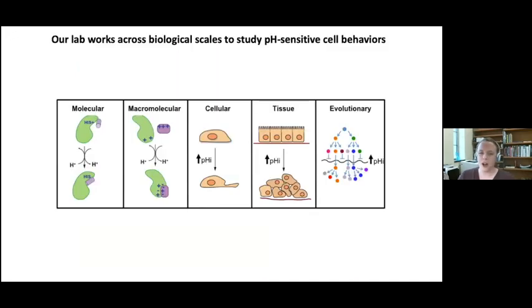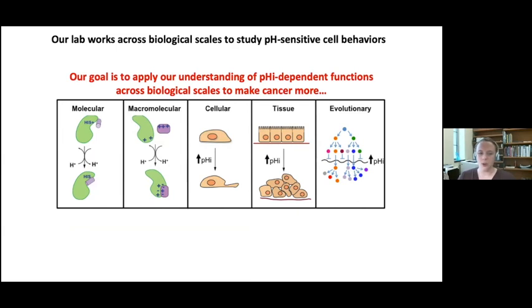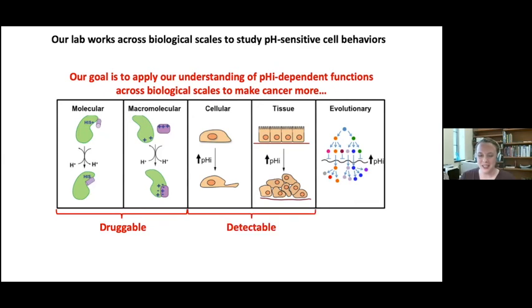Our lab works across biological scales to study pH-sensitive cell behaviors. We have an overall goal of applying our understanding of pHi-dependent cell functions across biological scales to make cancer more druggable at the molecular scale, to make cancer more detectable at the cellular and tissue scale, and to make cancer more predictable in terms of predicting patients that will respond to pH-lowering drugs and how cancer develops evolutionarily over time.